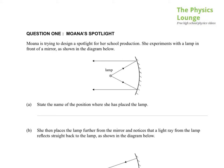The 2013 Level 2 Waves paper, Question 1. Moana's Spotlight. Moana is trying to design a spotlight for her school production. She experiments with a lamp in front of a mirror as shown in the diagram below.